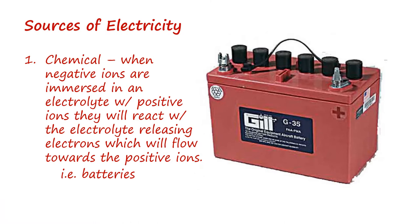One way of generating a voltage and electrical current is by a chemical reaction. In a charged battery there are positive ions on one side of a separator and negative ions on the other. Once a conductive path is established between the two sides, electrons will flow from the negative side to the positive side. This flow of electrons is an electrical current. Many batteries can be recharged by using a higher voltage to force electrons back to the negative side, re-establishing a potential difference between the two sides.